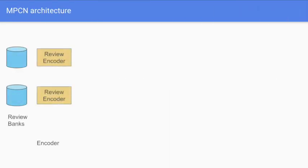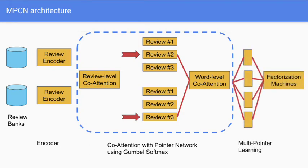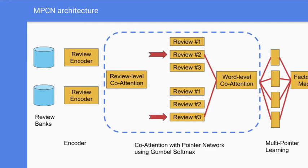Our proposed MPCN model comprises several components. Firstly, it utilizes a Gumball Softmax-based co-attention pointer layer to dynamically select the important reviews for each user-item pair. Secondly, the selected reviews are then matched using the word-level co-attention layer. This is done iteratively, which is why our model is called a multipointer network. Finally, a factorization machine layer combines all extracted features for computing the prediction score. For more details, please check out our paper. Thank you for watching.